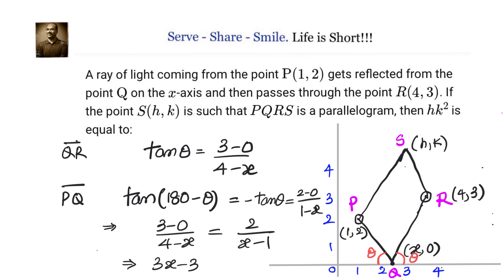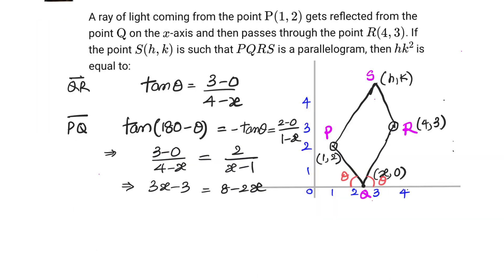Simplifying: 3x − 3 = 8 − 2x, so 5x = 11, giving x = 11/5 = 2.2. Now let us apply the second concept — that the diagonals of a parallelogram bisect each other — so midpoint of PR equals midpoint of QS.